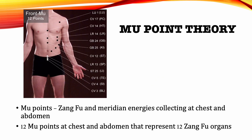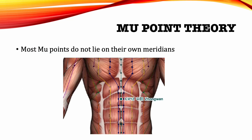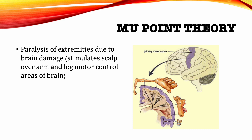The Mu Point Theory. Mu Points are zangfu and meridian energies collecting at the chest and abdomen. There are 12 Mu points at the chest and abdomen that represent 12 zangfu organs. Most Mu points do not lie on their own meridians. For example, the stomach Mu point is REN12, which is located on the REN meridian. However, REN12 or CIVA12 is a very effective point for stomach disorders because it is located over the stomach area. Similarly, when a patient has paralysis of the extremities due to brain damage, the use of scalp acupuncture to stimulate the scalp over the arm and leg motor control areas of the brain can be very effective to treat the paralysis. This treatment is based on the Mu Point Theory.